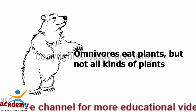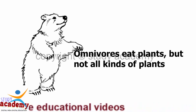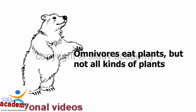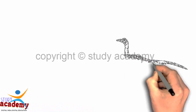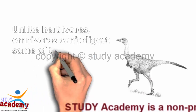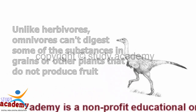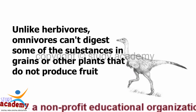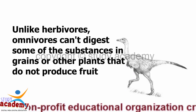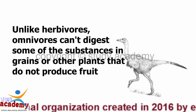Omnivores eat plants, but not all kinds of plants. Omnivores can't digest some of the substances in grains or other plants that do not produce fruit.